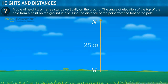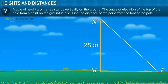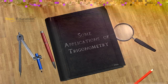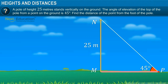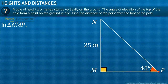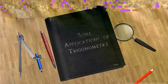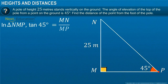Let MN represent the pole, and the point from where the top of the pole is observed be P. The angle of elevation from point P to the top of the pole is 45 degrees. We need to find the distance of point P from the foot of the pole M. Triangle NMP is a right-angled triangle. In the triangle, tan 45 degrees is equal to MN divided by MP.